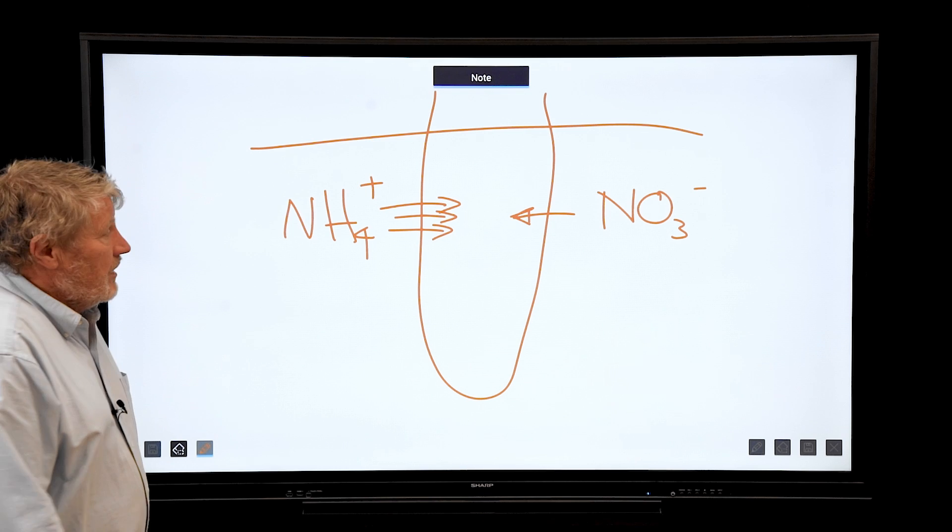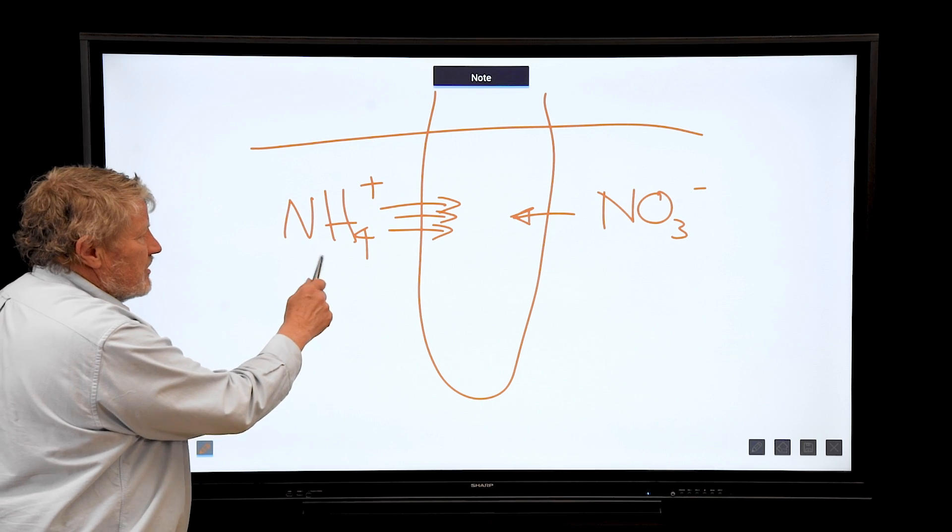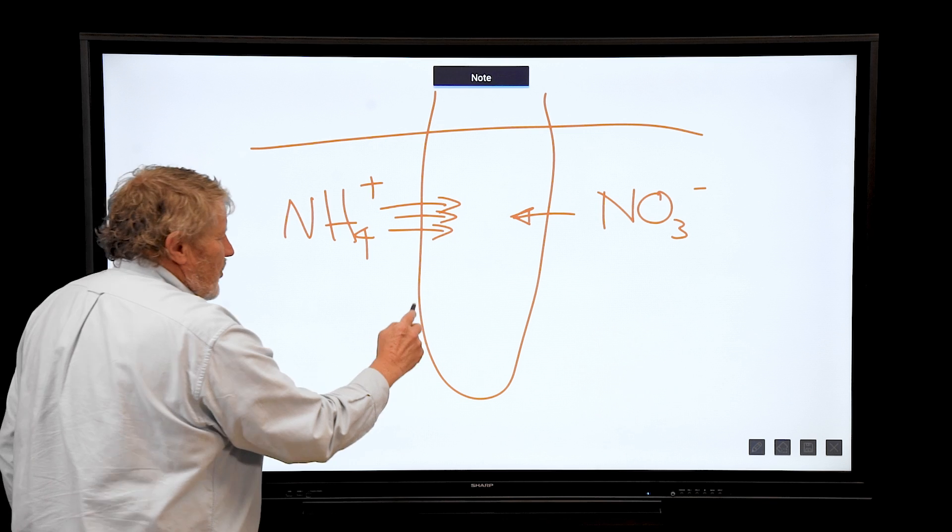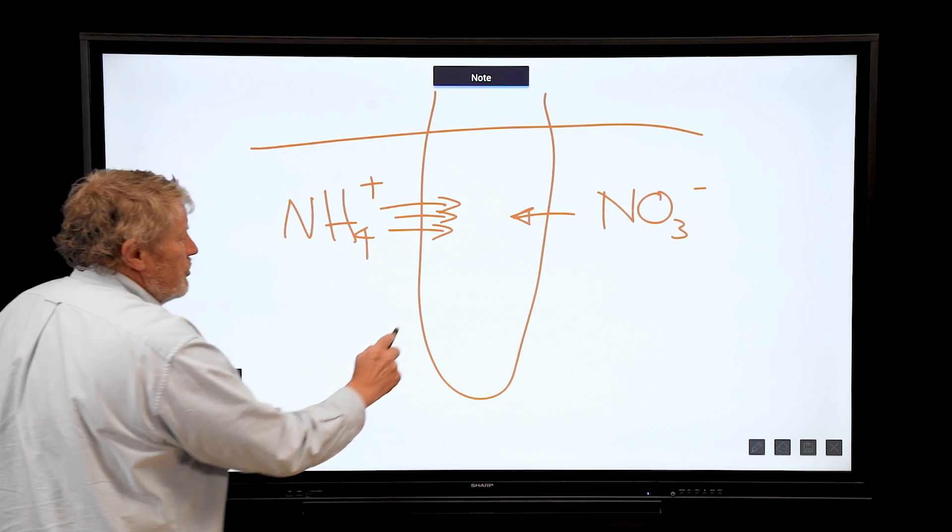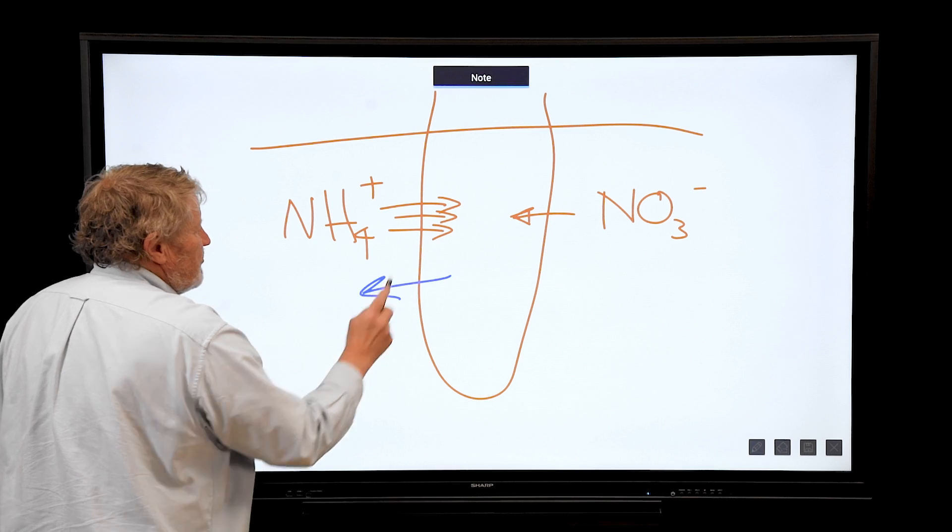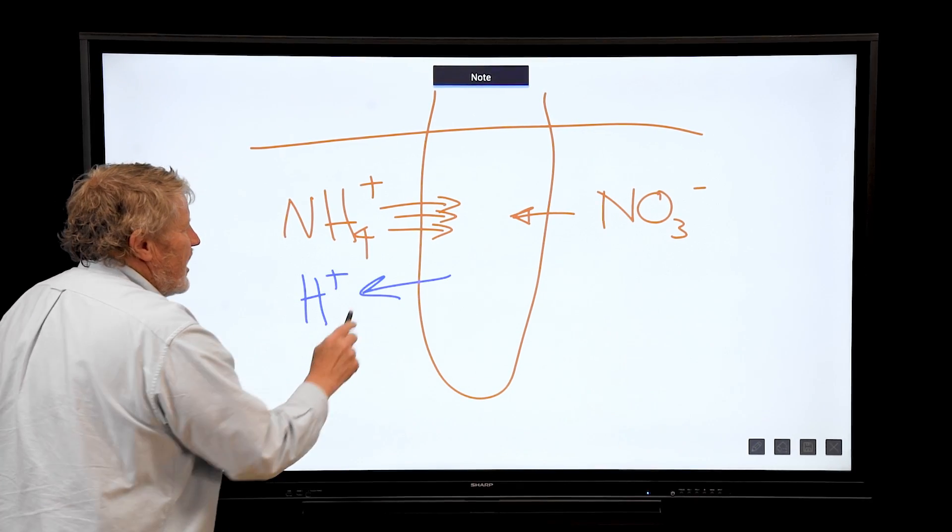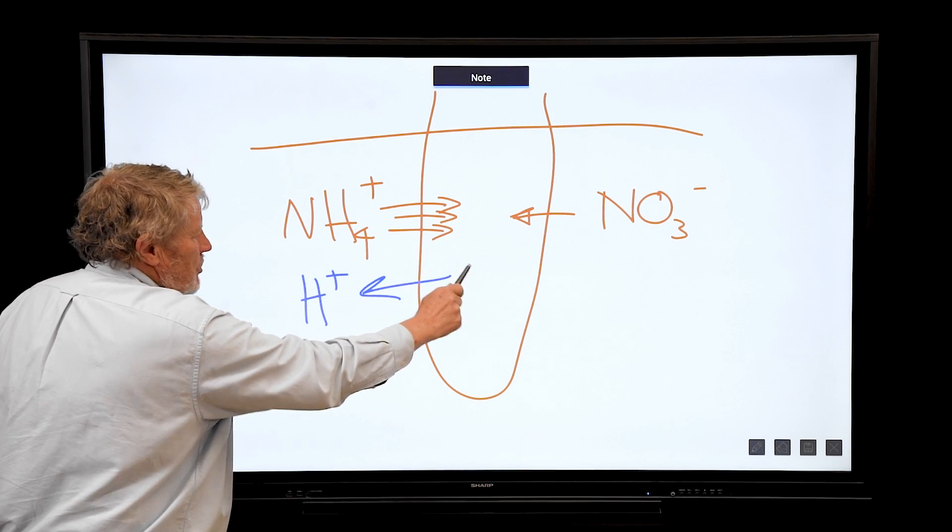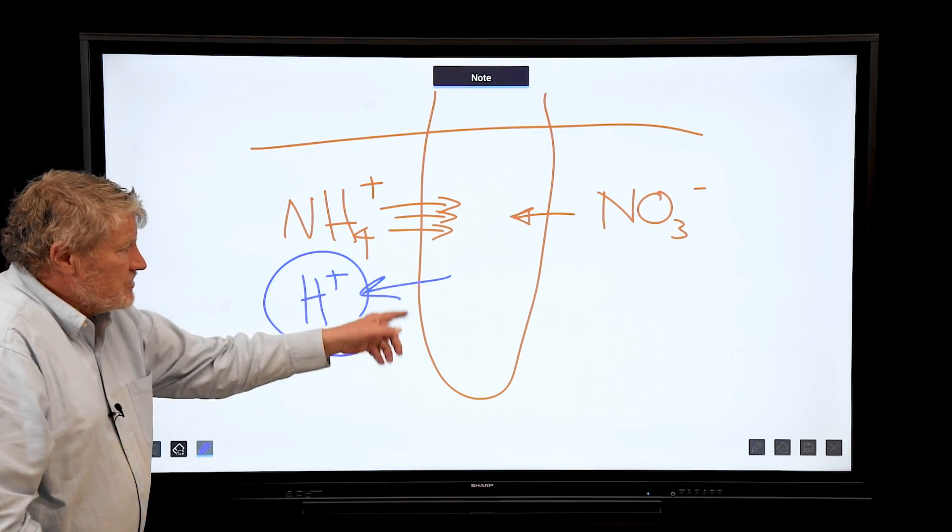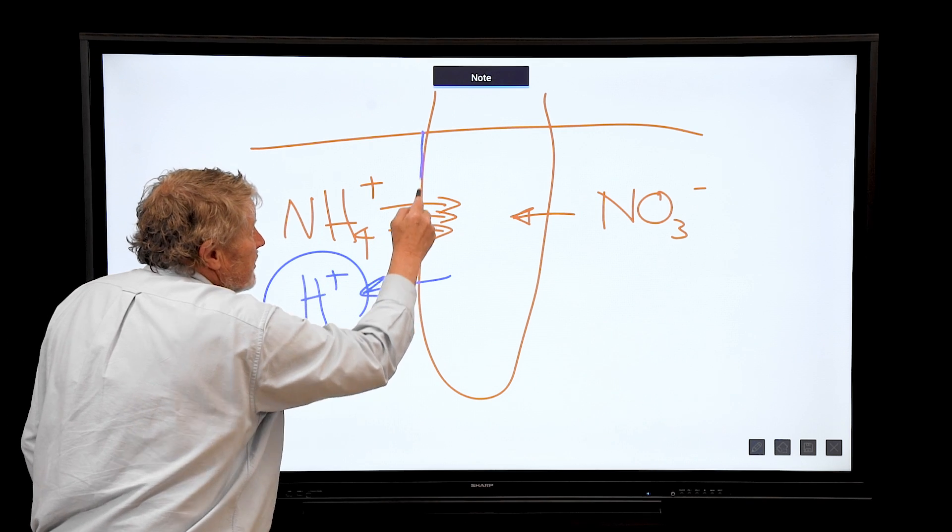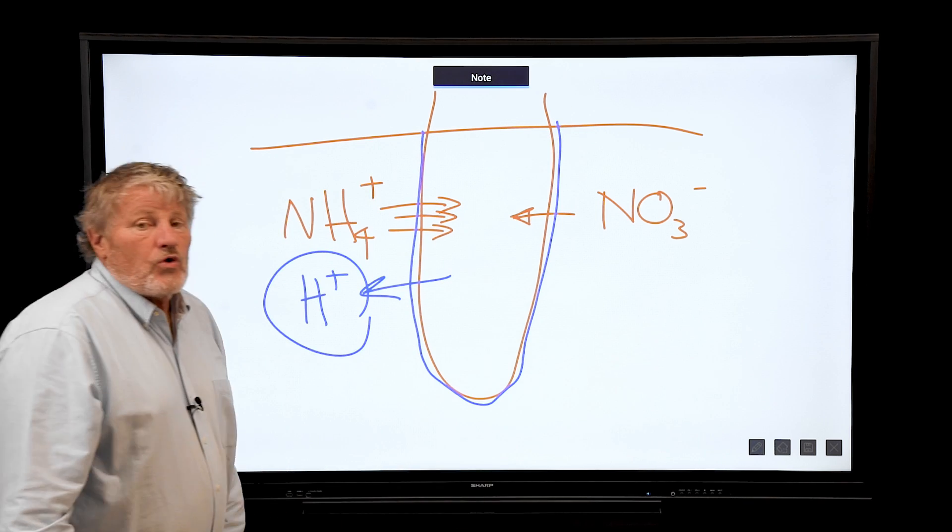It can be taken up too fast, so we want to regulate ammonium. But more importantly, when we feed ammonium, and let's put this in another color, we'll use blue. Because of this thing called charge balance, hydrogen comes out, a cation goes in, a cation comes out. And this means the rhizosphere, this little zone right next to the root, becomes more acid.